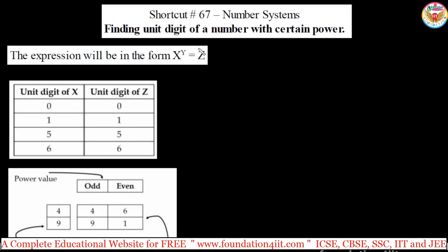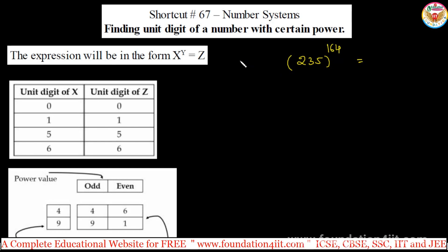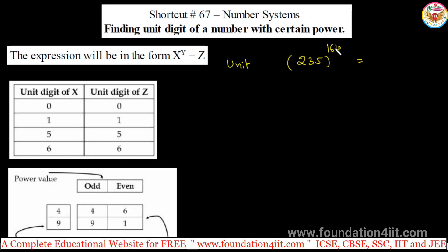In number systems, finding the unit digit of a number with a certain power — we can expect these types of questions. Instead of lengthy calculations, we can use shortcut tricks. For example, 235 to the power 164: what is the unit digit? This means 235 multiplied 164 times — we need to find the unit digit.